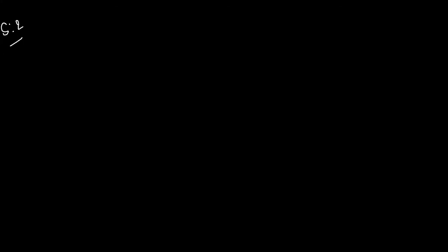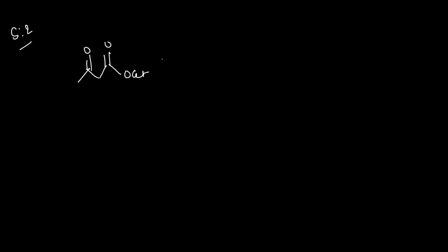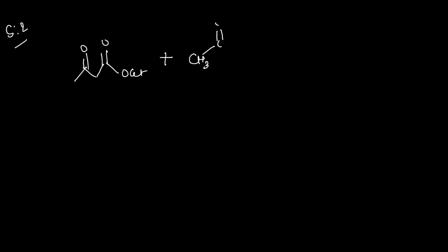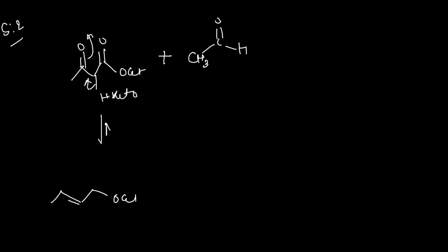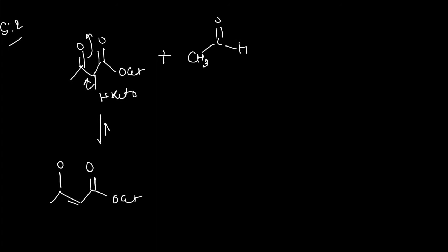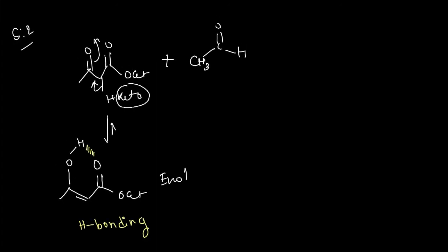In Step 2, an aldol-type reaction occurs. We have another molecule of ethyl acetoacetate and acetaldehyde. First, keto-enol tautomerism occurs on ethyl acetoacetate — the alpha hydrogen is present, so the enol form is generated. This enol form is stabilized by intramolecular hydrogen bonding.